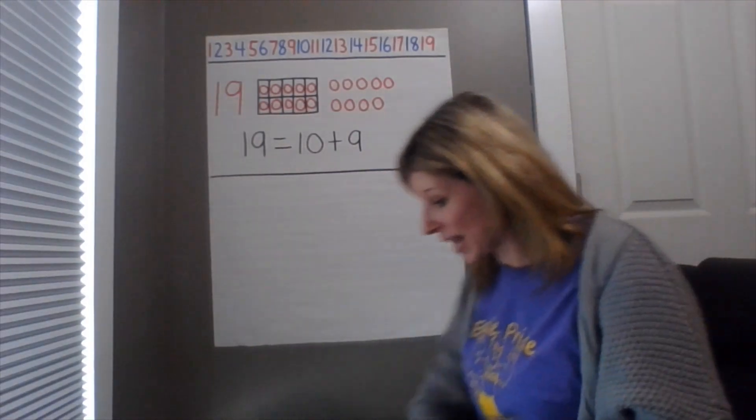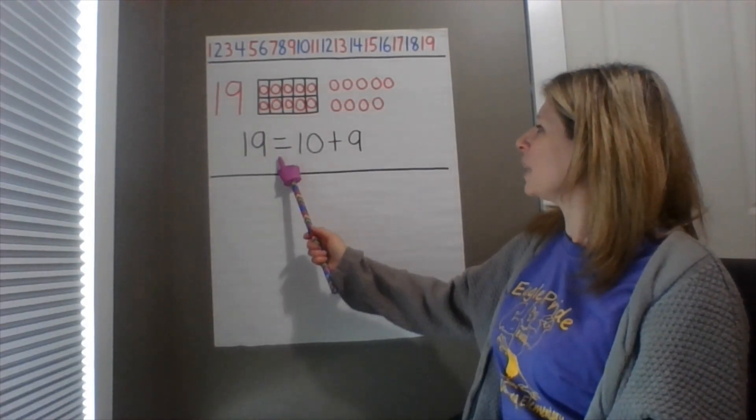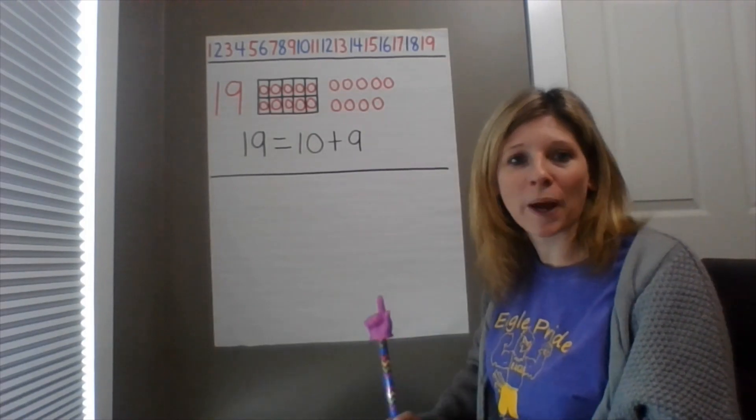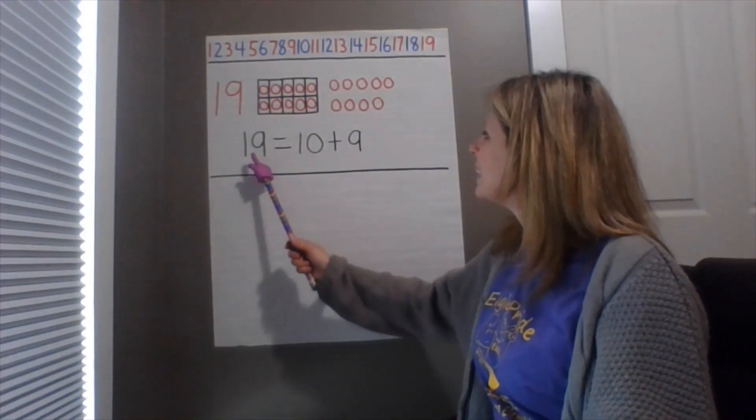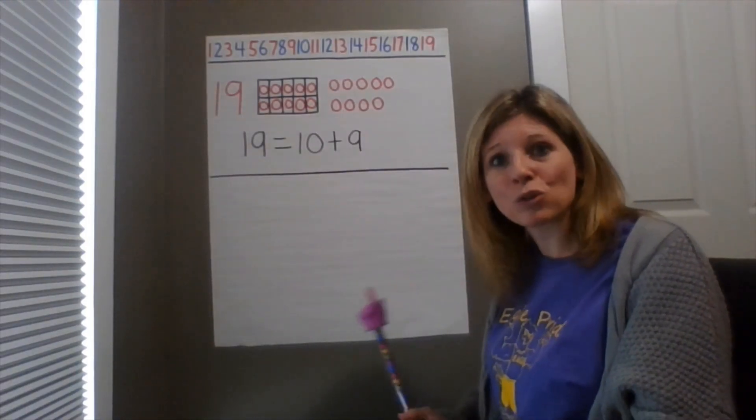Let's read that number sentence. Here we go. 19 equals 10 plus nine. Let's practice it one more time. 19 equals 10 plus nine. Excellent.